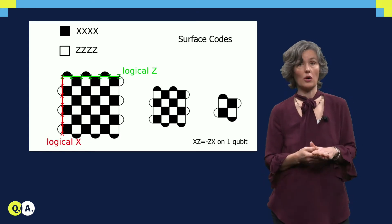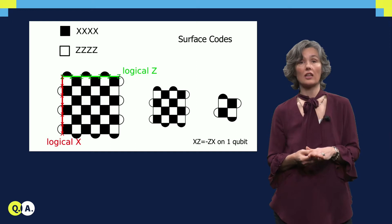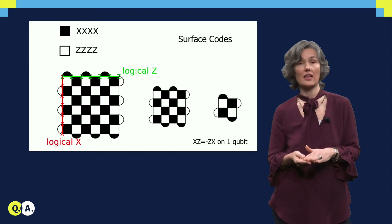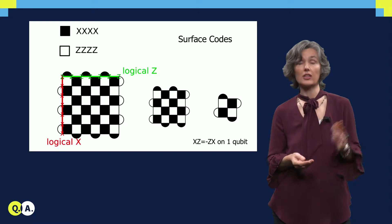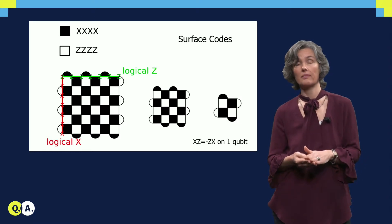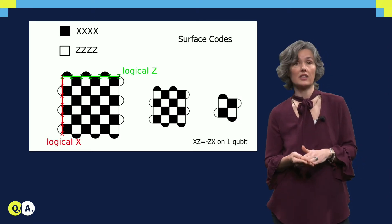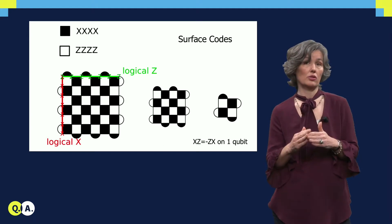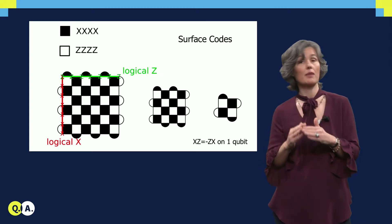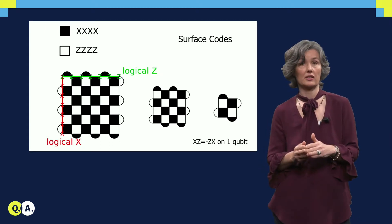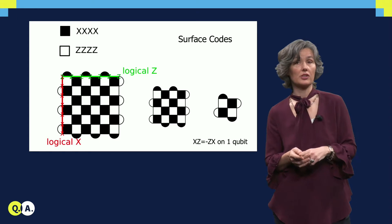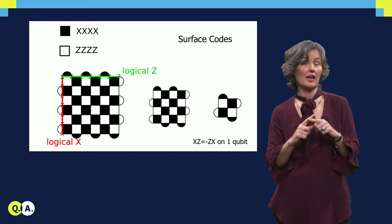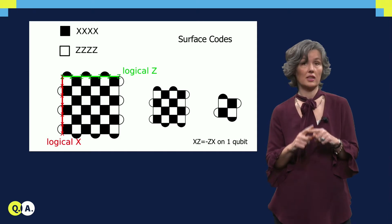The distance of the code is 7, since the logical operators of the logical qubit act on at least 7 qubits. You see the logical operators on the slide. The defining feature of the logical x and z operators is that they mutually anti-commute, but at the same time they commute with all the parity checks. You can verify this yourself by using that x and z anti-commute when they act on the same qubit, otherwise they commute.